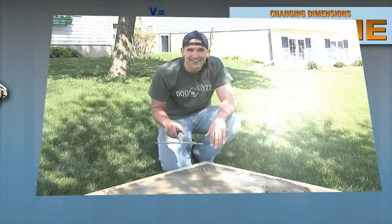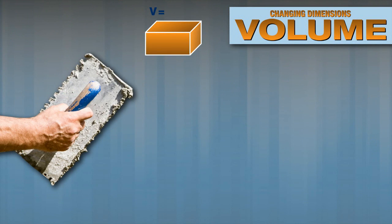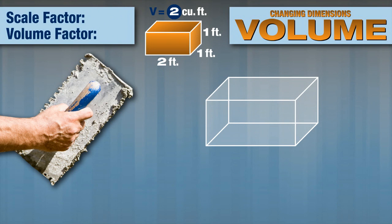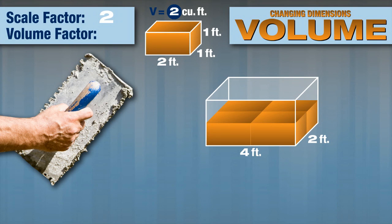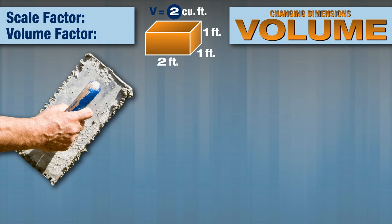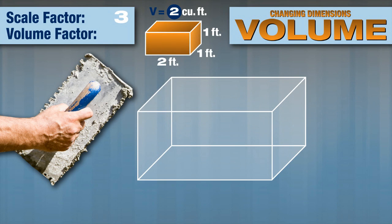I'll show you why that's correct. The volume of a prism measuring 2 feet by 1 foot by 1 foot is 2 cubic feet. If we double each dimension, the scale factor is 2 and the new prism measures 4 feet by 2 feet by 2 feet. The volume of the new prism is 16 cubic feet, which is 8 times the volume of the original prism, so the volume factor is 8. What do you think will happen if we triple the dimensions of the original prism?